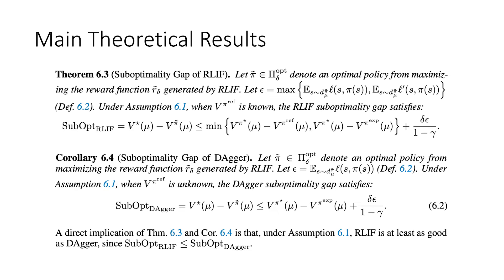We also put Dagger and RLIF under a unified framework for analysis, and see that asymptotically, Dagger can be bounded as shown in the equation of Corollary 6.4, and RLIF can be bounded as shown in the equation in Theorem 6.3, and the bound for RLIF is less than or equal to that of Dagger.